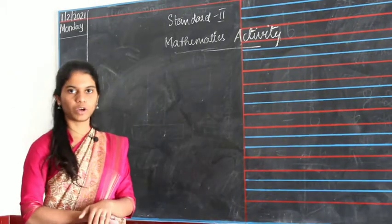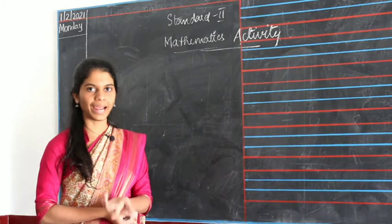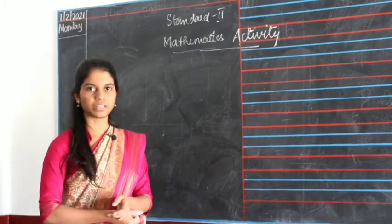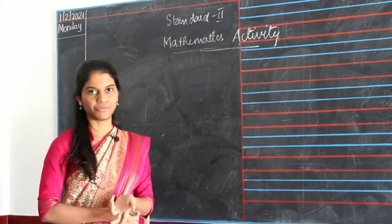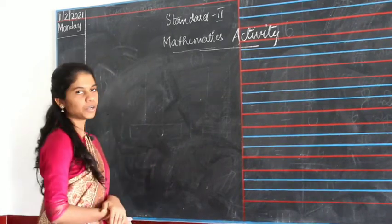Good morning children. Today we are going to see how you have to do your activity. Your activity is to find straight lines and cross lines in alphabets. So for that, what you have to do...